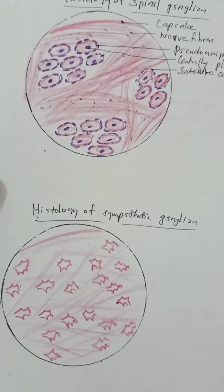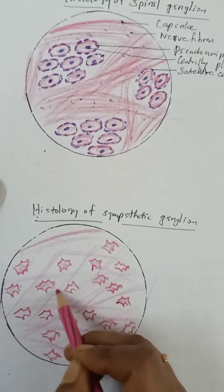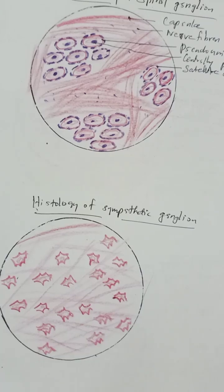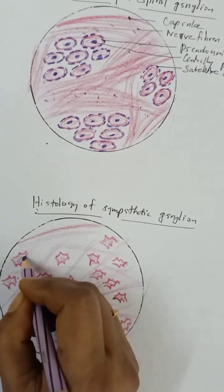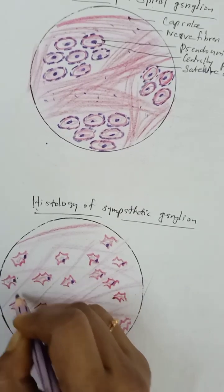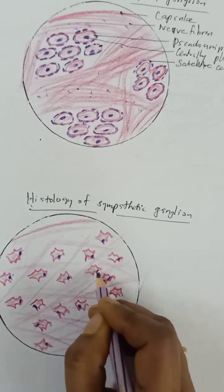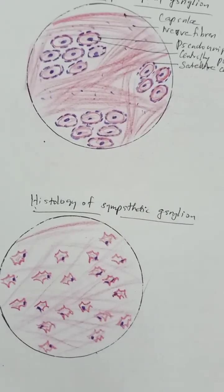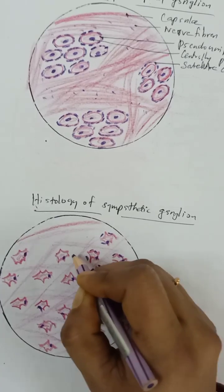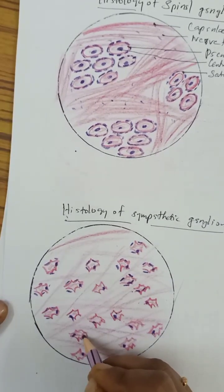The multipolar neurons are scattered, and their cytoplasm takes eosin stain. Their nucleus is placed eccentrically — near the periphery — so it is eccentrically or peripherally placed, not in the center. The number of satellite cells is very few here compared to the spinal ganglion, where satellite cells are more numerous.